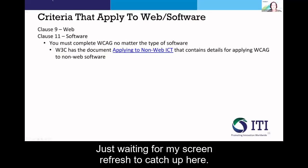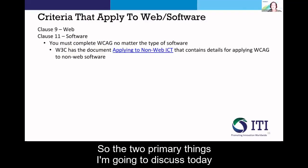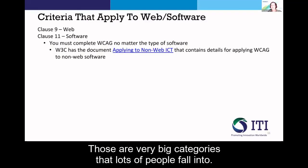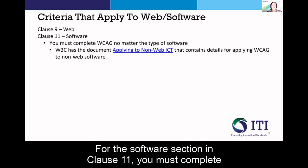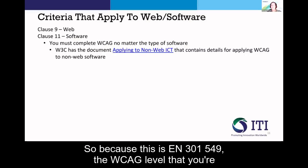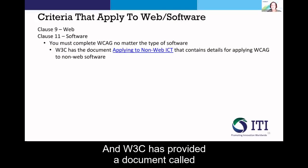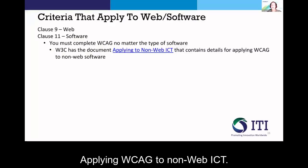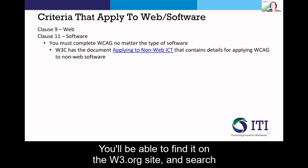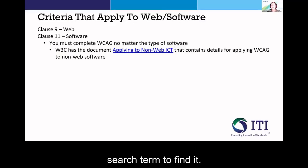The two primary topics now are web and software — very big categories that lots of people fall into. For the software section in clause 11, you must complete WCAG no matter what type of software it is. Because this is EN 301 549, the WCAG level you'll want to fill this out to is 2.1. W3C has provided a document called 'Applying WCAG to Non-Web ICT,' which you can find on the w3.org site by searching for 'non-web.'